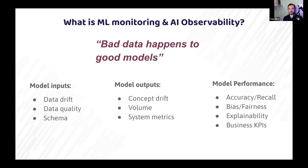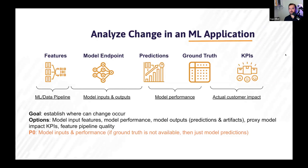We have a saying: bad data happens to good models. No matter how much evaluation and testing you do, when you put a model in production, chances are you're going to see behavior or something that you weren't expecting or weren't able to catch in your evaluation phase. You might have heard of things like data drift, where the input data to your model no longer matches the distribution the model was trained on.